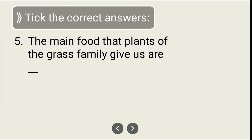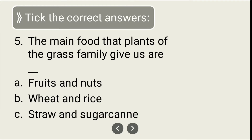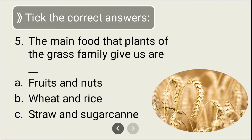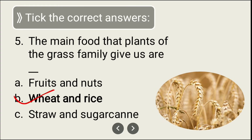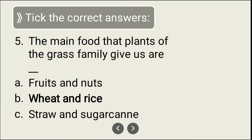The fifth question: the main food that plants of the grass family give us — options are: fruit and nuts, wheat and rice, or straw and sugar cane. The correct answer is wheat and rice. From the grass family, these two plants give us our main food.